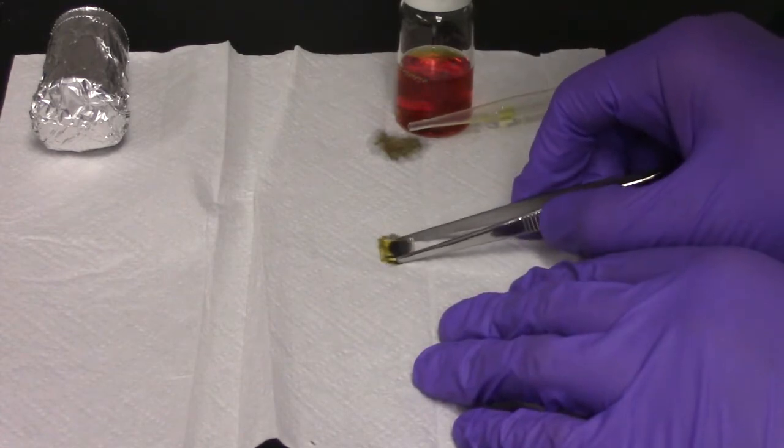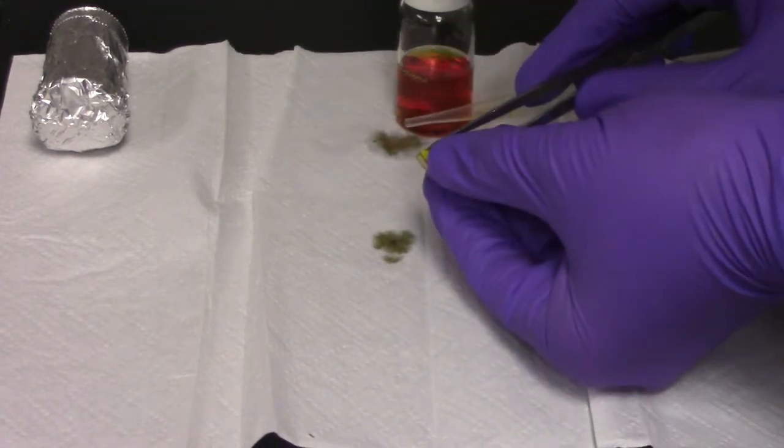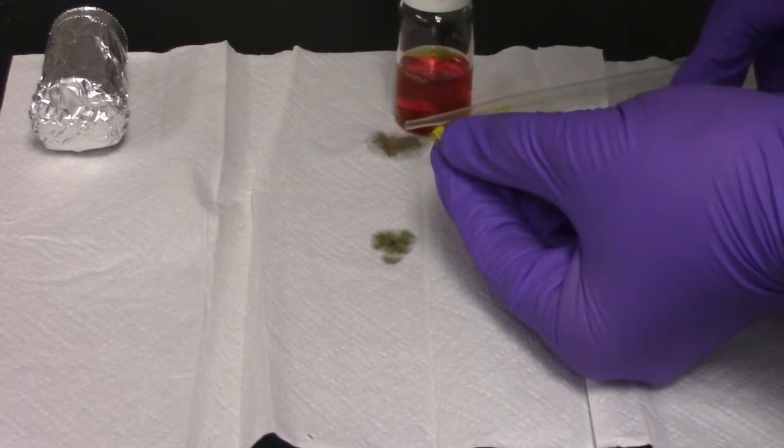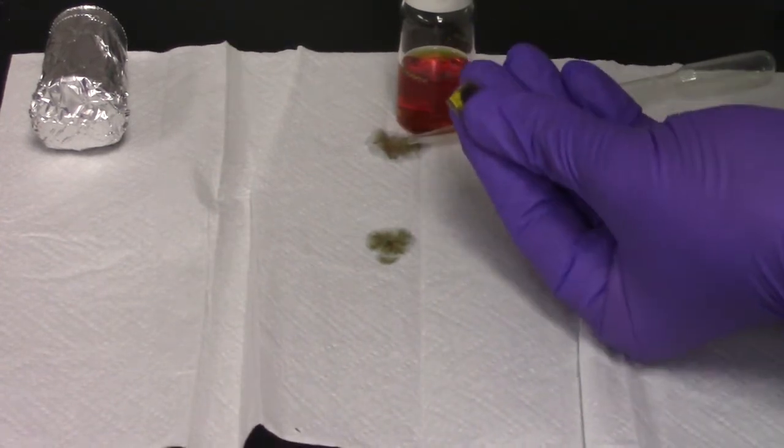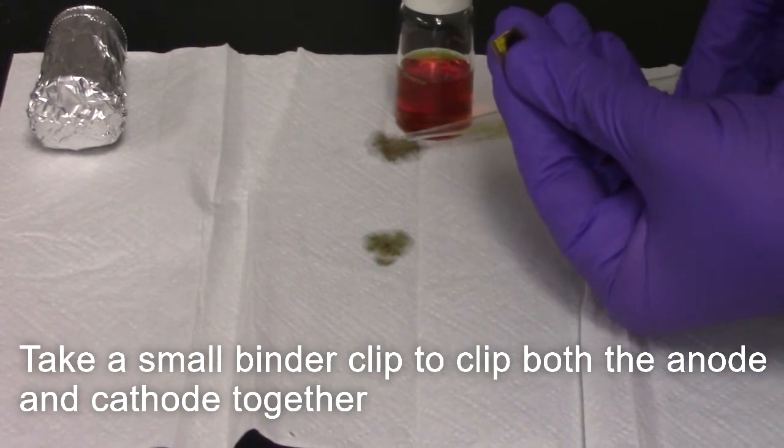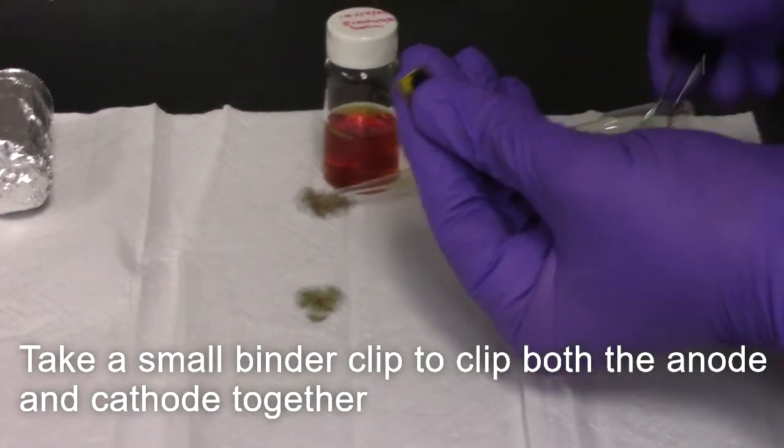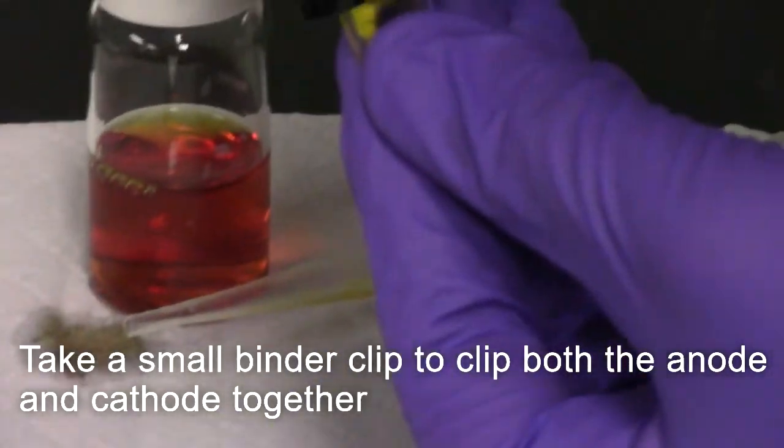Carefully take the anode and cathode with the electrolyte solution and add a small binder clip which will keep both the cathode and the anode tight together.